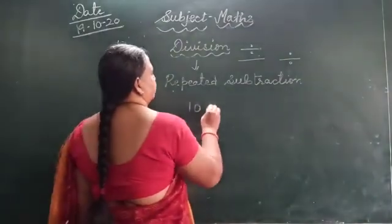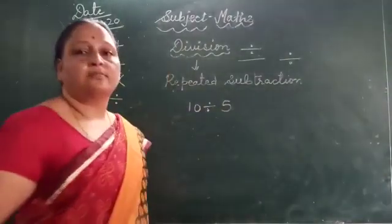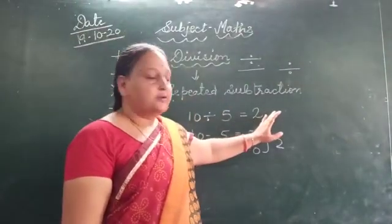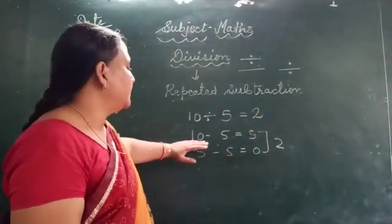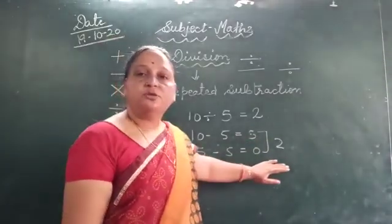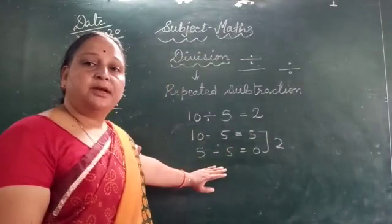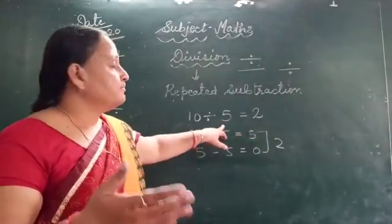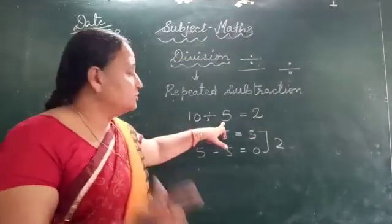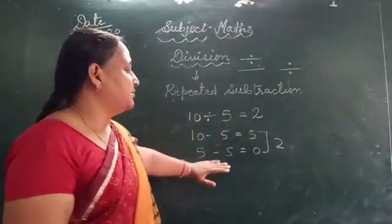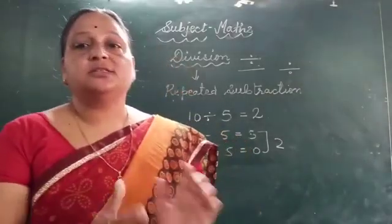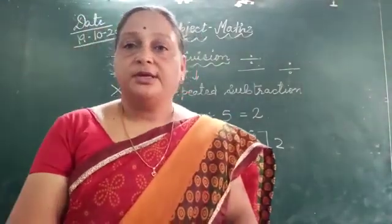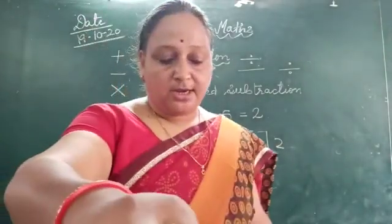Let's take another example: 10 divided by 5. Using the repeated subtraction method: 10 minus 5 is equal to 5, and 5 minus 5 is equal to 0. How many times? 2 times. So our answer is 2. If we use the 5 times table: 5 ones are 5, 5 twos are 10 — so 2 times. The subtraction method is being explained first, but the easiest method we will use is the tables method.